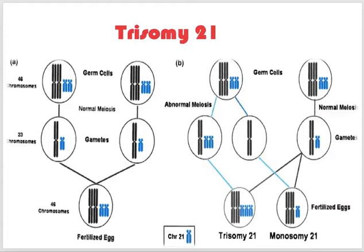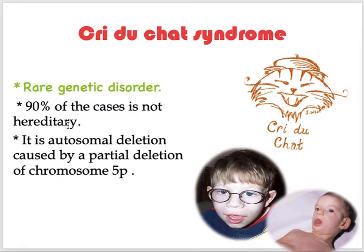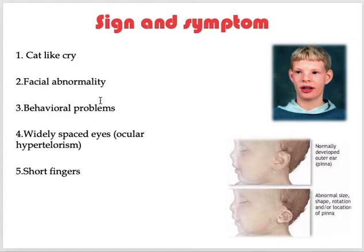Any chromosomal or genetic abnormality can lead to structural or functional problems. For example, Cri du chat syndrome is caused by a partial deletion at chromosome number 5 — called that because the baby's cry sounds like a cat. About 90% of cases are not hereditary — it is a sporadic condition. Features include facial abnormalities, behavior problems, and white patches.